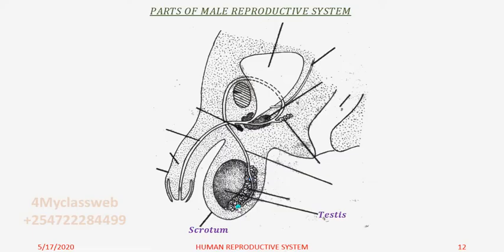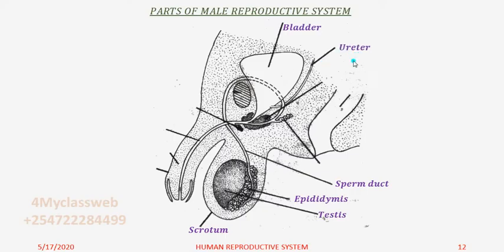Behind the testes, attached to it, is the epididymis. And from the epididymis there is this tube here that we call the sperm duct. All the way through next we have this organ which stores urine — we call it the bladder. And it receives urine from the kidneys through this pipe that we call the ureter.